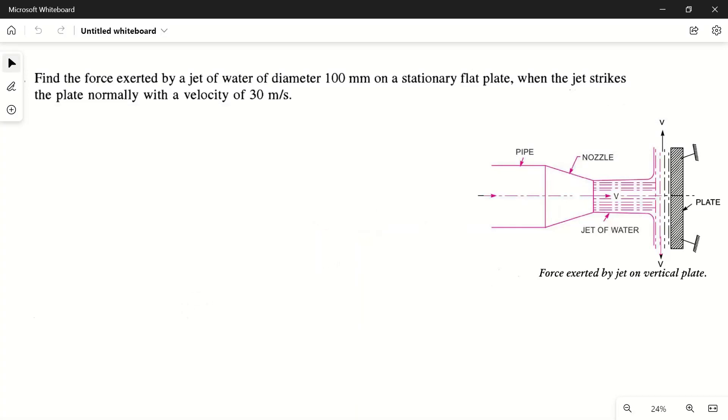Hello friends, I welcome you to my YouTube channel Make PM. In today's video we will solve a numerical problem. Let's read out the problem: Find the force exerted by a jet of water of 100mm diameter on a stationary flat plate when the jet strikes the plate normally with a velocity of 30 meters per second.